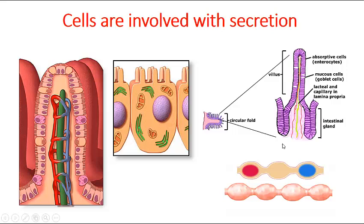The mucosal epithelium normally functions in both secretion and digestion, and is also involved in the absorption of nutrients. Individual cells are filled with sac-like structures and Golgi apparatus, because they are designed to absorb nutrients. Goblet cells are secretory cells that release mucus, which is a hydrated mucin protein. The other mucosal epithelial cells secrete digestive fluids and have the property of absorbing nutrients.